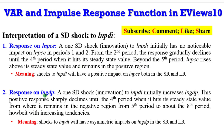What will be the response of GDP? You can also say that initially GDP increases. This positive response then declines sharply up to the fourth period when it hits the stable state, from where it remains in a negative region from the fifth to the eighth period, albeit with increasing tendencies. You can conclude that shocks to PDI will have asymmetric impacts on GDP in both the short run and the long run, but shocks to PDI on PCE will have positive impacts both in the short run and in the long run.